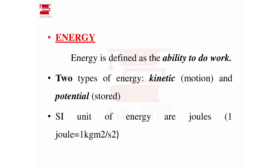Energy is defined as the ability to do work. There are two types of energy: kinetic energy and potential energy. Kinetic energy is the energy of motion, and potential energy is stored energy.